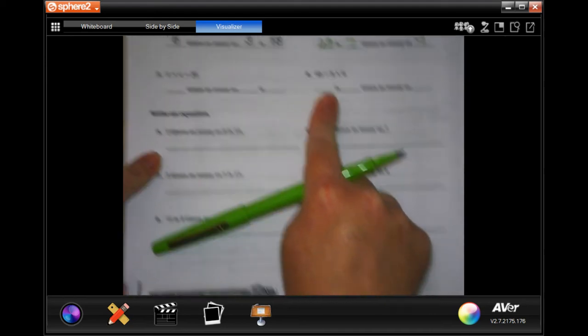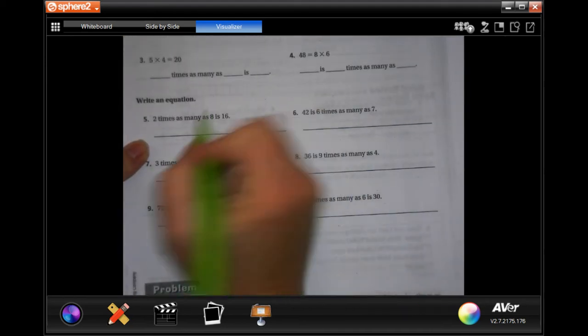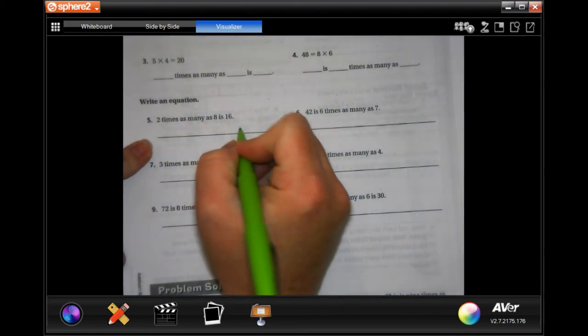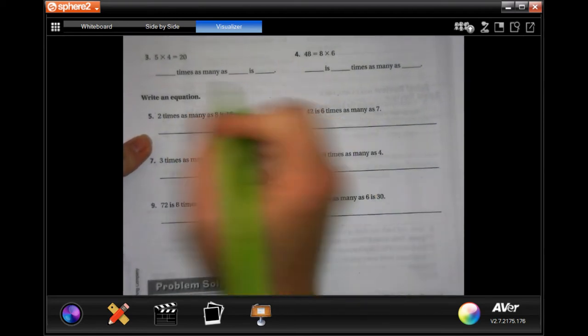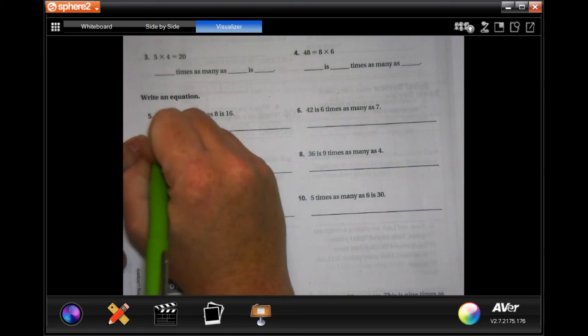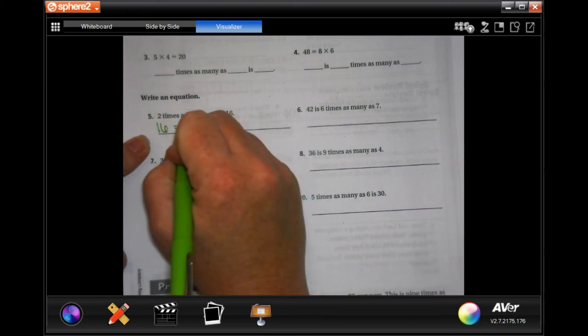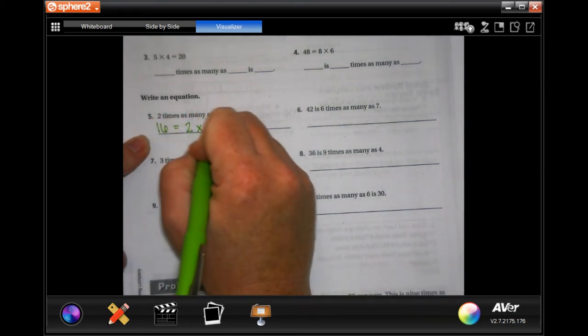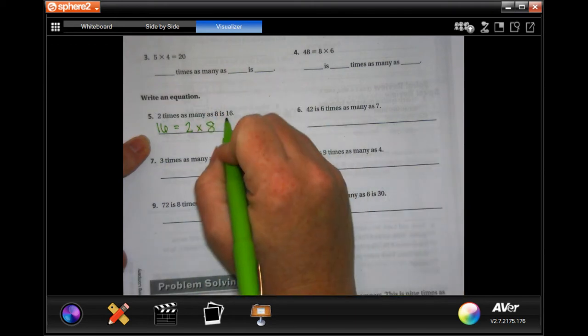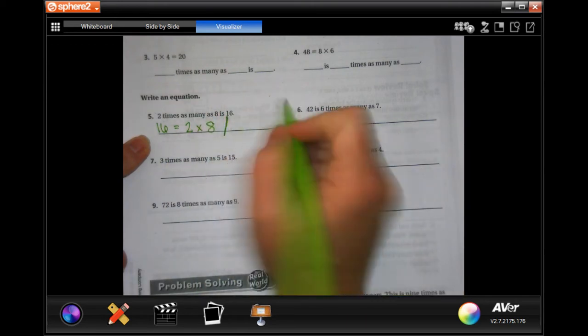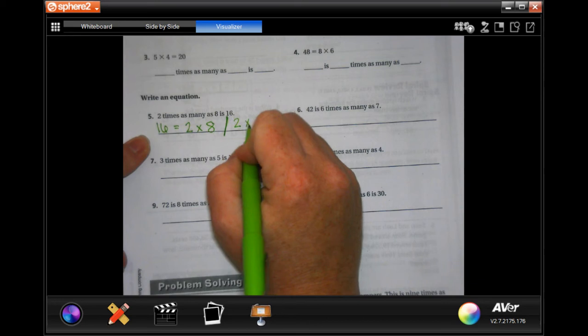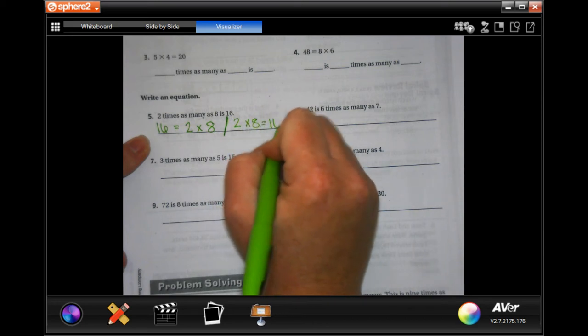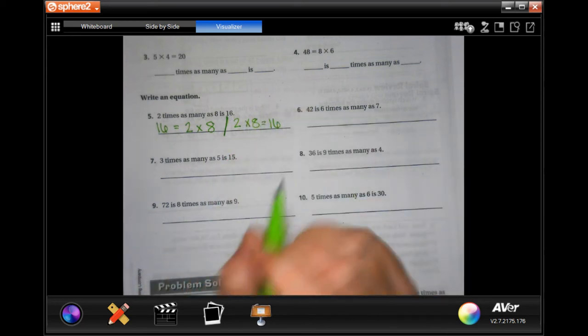We're going to go down to number five and you're going to write two times as many as eight is 16. So we can either write it like above where it says 16 equals two times as many as eight, or we can write two times as many as eight equals 16. Either way is totally fine.